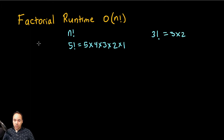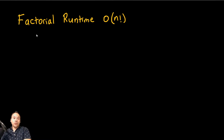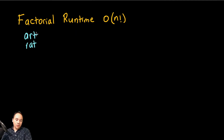Factorial equals 3 by 2 by 1. Now let's do it in code, and why is that important? There are some problems that can be solved in factorial runtime. One of them is finding all the different permutations a word can have. Let's say you have the word 'art' — you can arrange it as 'art', 'tar', and so on. Our task right now would be to write a program to find all the different permutations of the word.